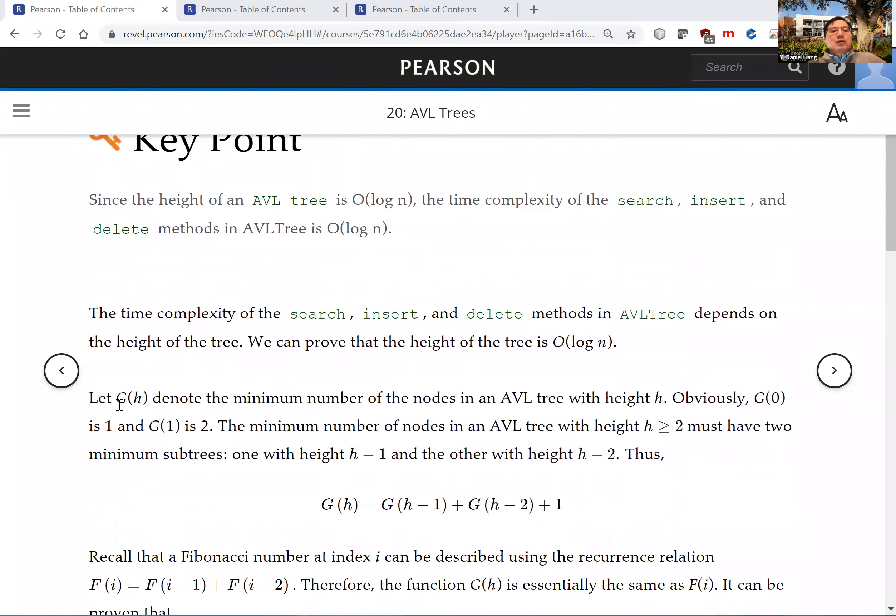We're going to use G(h) to denote the minimum number of nodes in an AVL tree with height h.